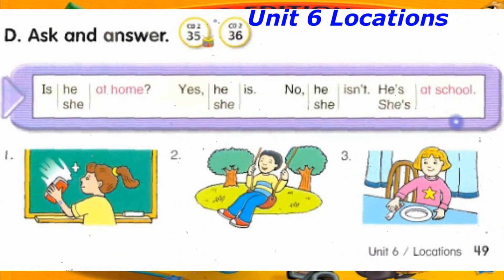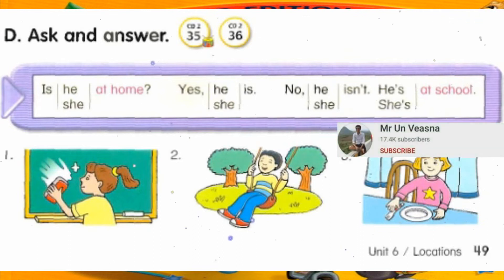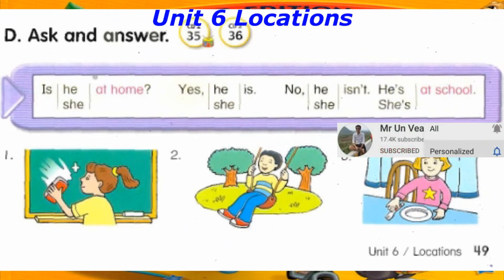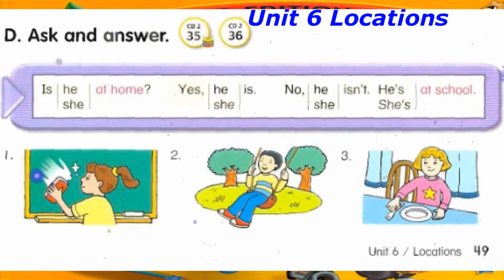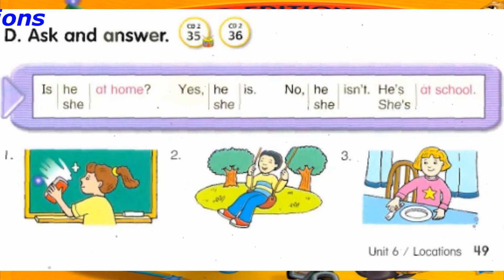Track 35. D. Ask and answer. Is he at home? Yes, he is. Is she at home? No, she isn't. She's at school.